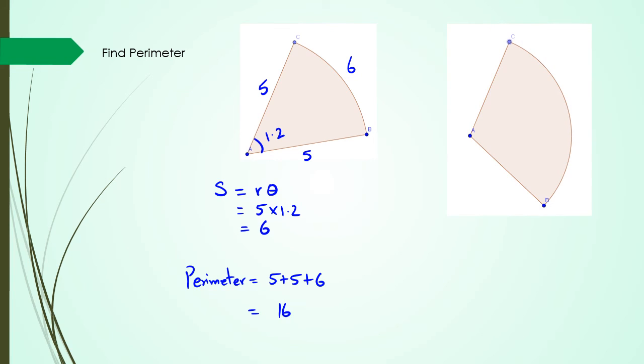And the same way, if I was to do another problem, and I call this 2.1 radians, let's make this 3. So this would be 3. So we find the arc length first. So we have 3 times 2.1, which is 6.3 units. And that's 6.3. And of course, our perimeter is going to be the sum of all sides, which is 3 plus 3 plus 6.3. And we get 12.3 units.